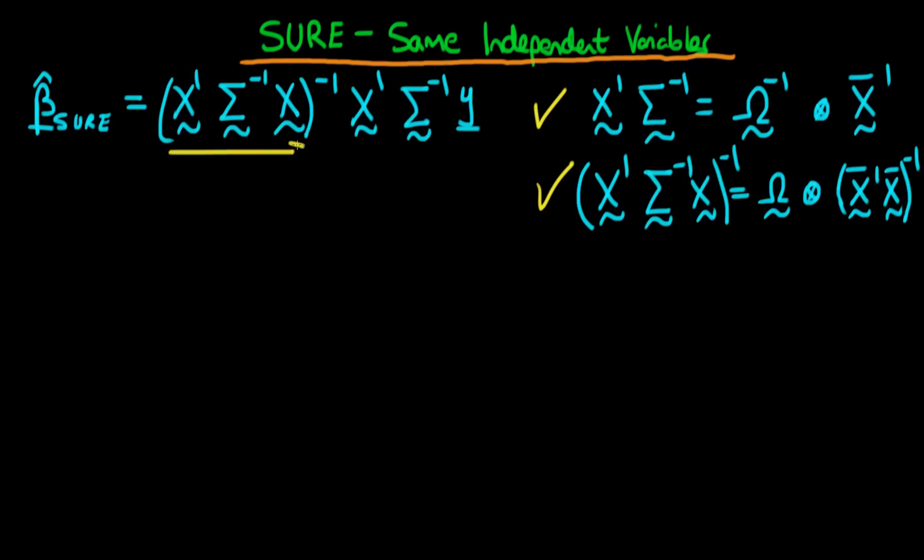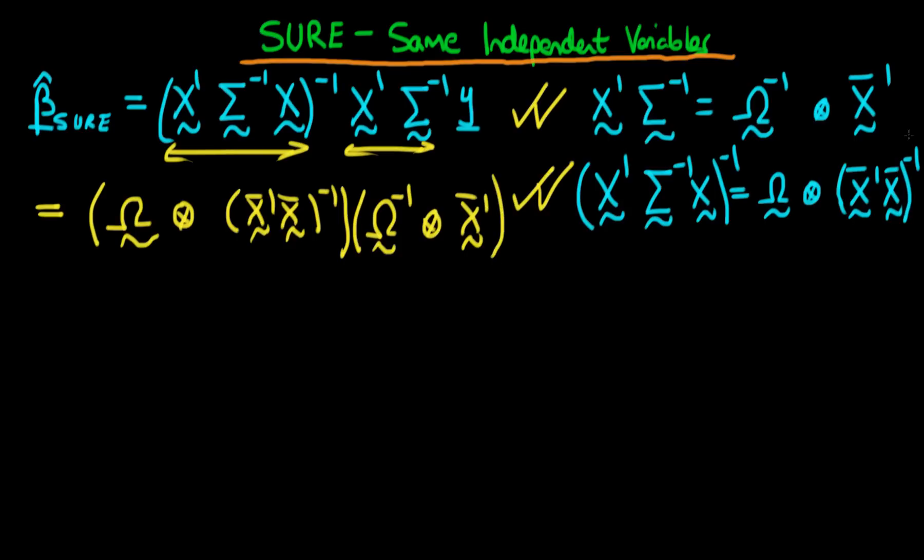So the first term in beta hat SURE is the second result which we derived, and then the next term before the y is the first result which we derived. So in order to derive beta hat SURE we just need to put these things together. The first term is just omega crossed with x bar primed times x bar all inverted times the Kronecker delta product of the inverse of omega with x bar primed.